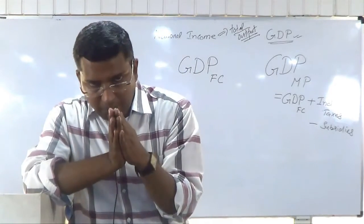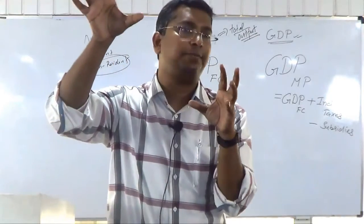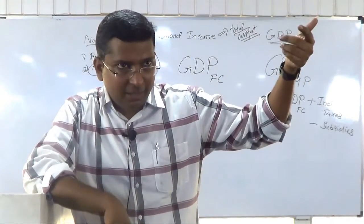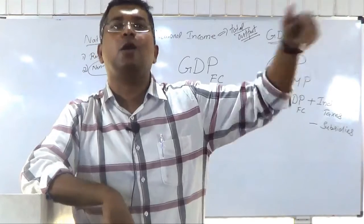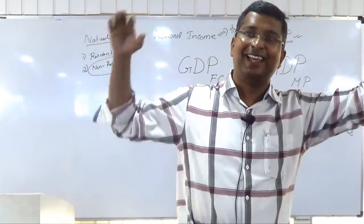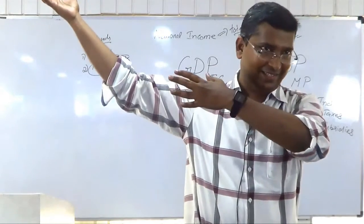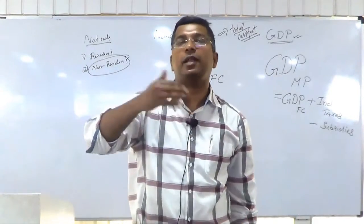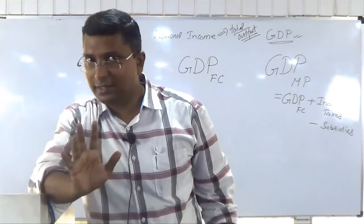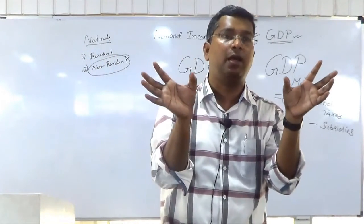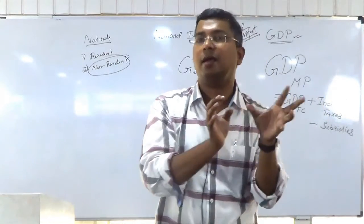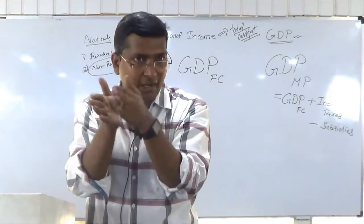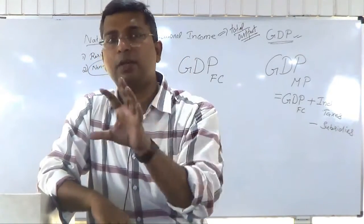In the newspaper you will come across two things: GDP at market prices and GDP at constant prices — both are different. Constant price refers to the base year price. At market price, indirect taxes are added and subsidies are deducted. When we talk about GDP, two dimensions apply: either factor cost or market price, and either current price or constant price. You have to combine both to make the concept very clear.